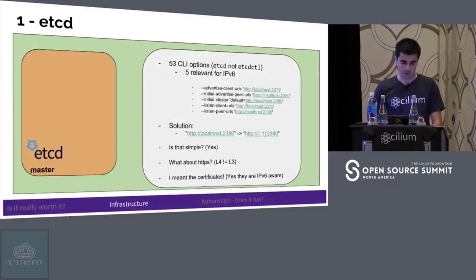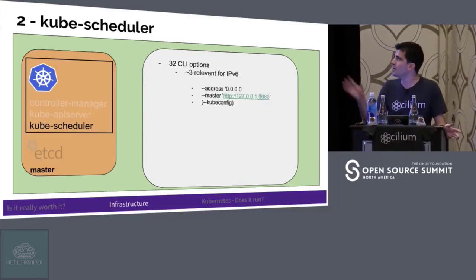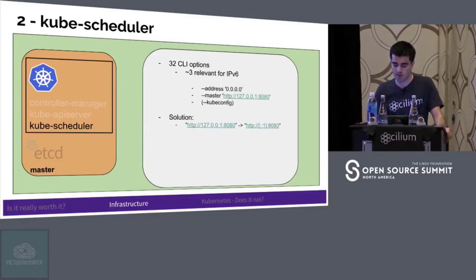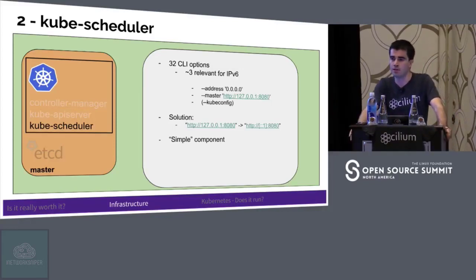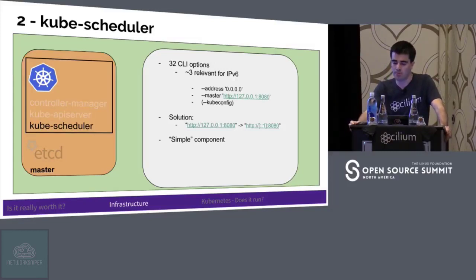So let's move on to the next component, which is Kubernetes — now we are going to kube-scheduler. Kube-scheduler is a simple component. It only has around 30 options and only about three of them are relevant for IPv6 in our cluster. We can apply the same solution as with etcd. This is a simple component regarding the IPv6 side of our cluster, because it only manages which node will receive which pod. I will not start kube-scheduler now because it will need kube-apiserver to run first, and later I will run both at the same time.